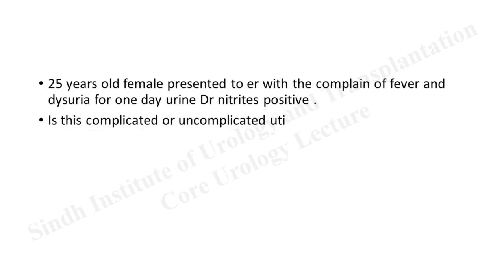If a male gets a UTI, it most likely means he has either anatomical or functional dysfunction, such as bladder outlet obstruction or bladder dysfunction. In females, because the urethra is very short and in close proximity to the anus, there is a high chance of getting a UTI even with simple induction. That is why most UTIs in males are labeled as complicated. A 25-year-old female presenting with dysuria for one day and positive nitrites would be classified as uncomplicated UTI.